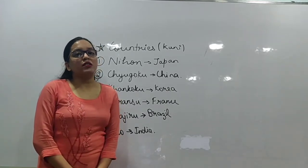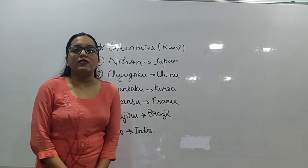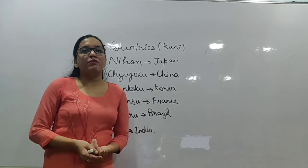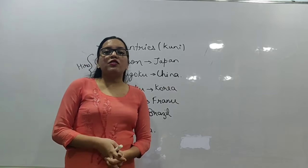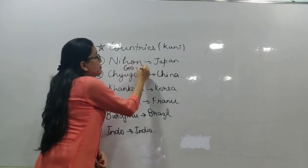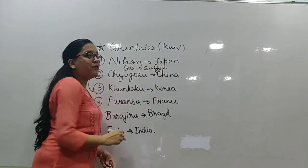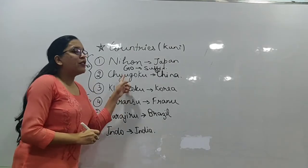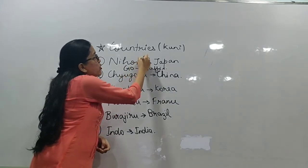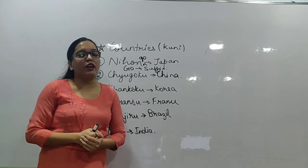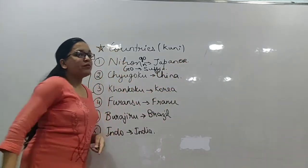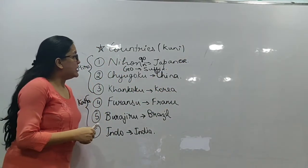When talking about countries, we also talk about languages. If we know the country name, forming the language name is easy — we simply add the suffix 'Go' after the country's name. So Nihon becomes 'Nihongo,' which means Japanese language. Similarly, Chugoku becomes 'Chugokogo' for Chinese language, and Khankoku becomes 'Khankokogo' for Korean language.